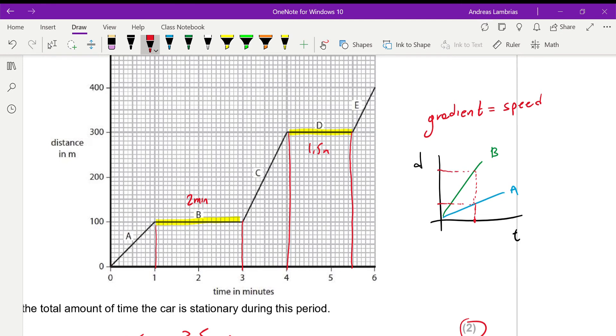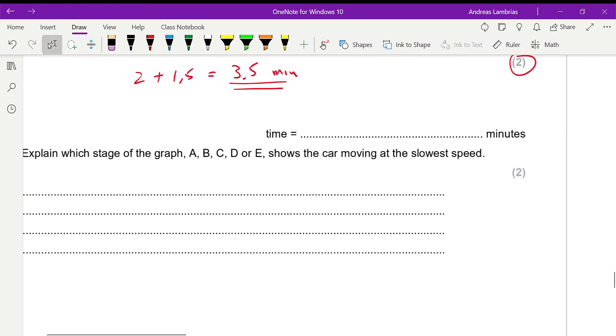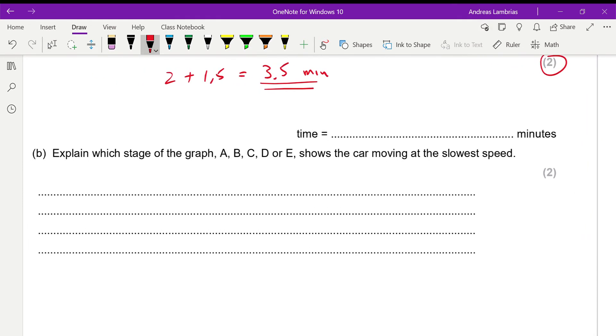If we compare all these sections we can see that section A is the one having the smallest gradient, is the less steep comparing to C and E. It's something you can recognize by eye, in that case you don't need to do any calculations.